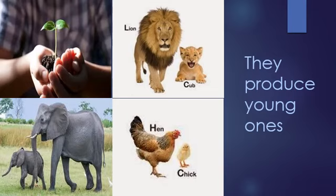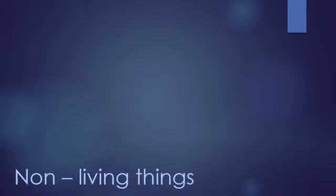When you were in UKG or LKG, you were small. Now you have all grown up in your height and the way you look — everything has changed a little bit, and it is going to keep changing. That means living things can produce young ones and those young ones grow.